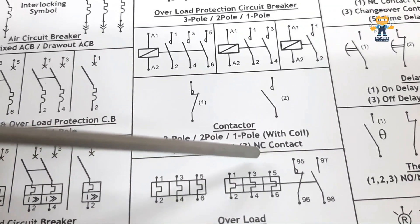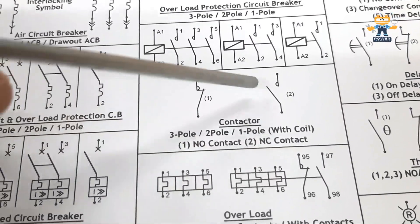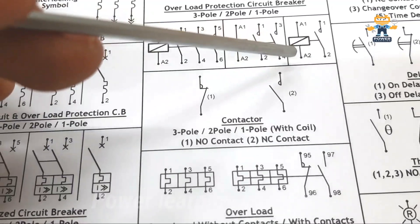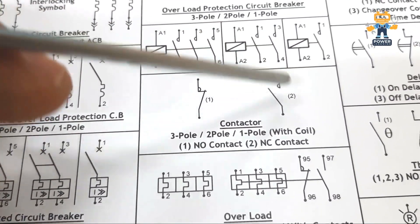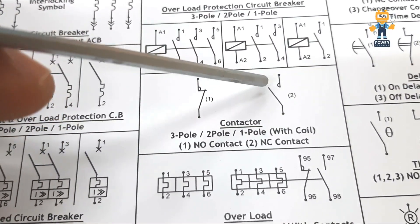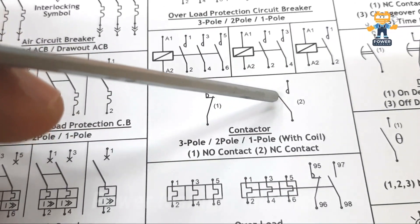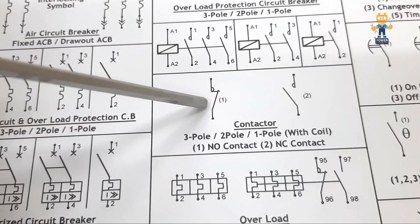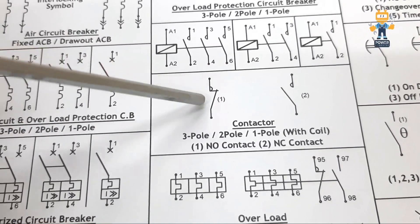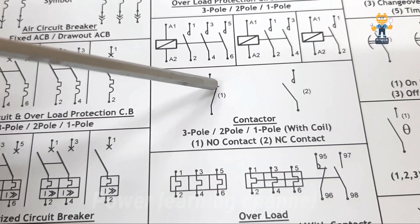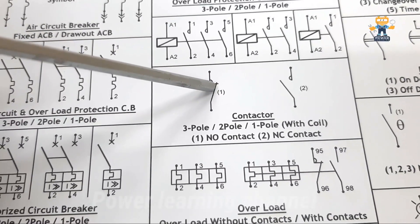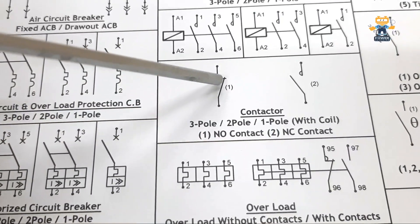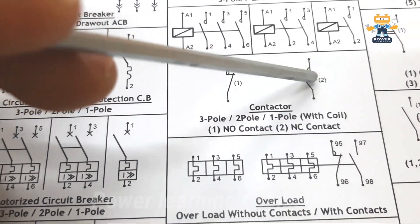Here it is showing normally open (NO) and normally closed (NC) contacts. The NO contact means the circuit is open in normal condition — you connect input here and take output, but the switch is open. The NC contact means the circuit is closed in normal condition. Note: the numbering shown is incorrect — number two is normally closed and number one is normally open.